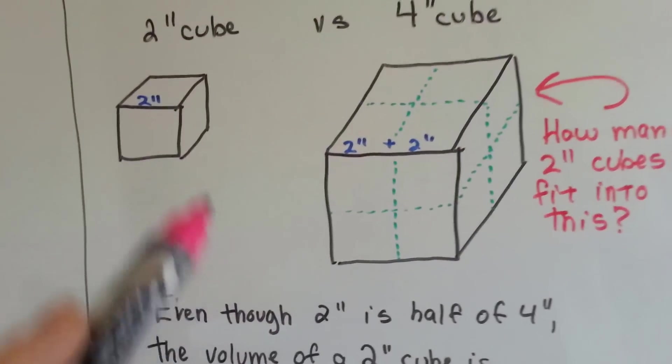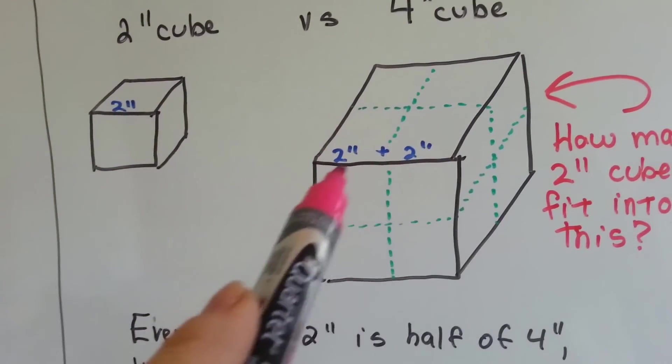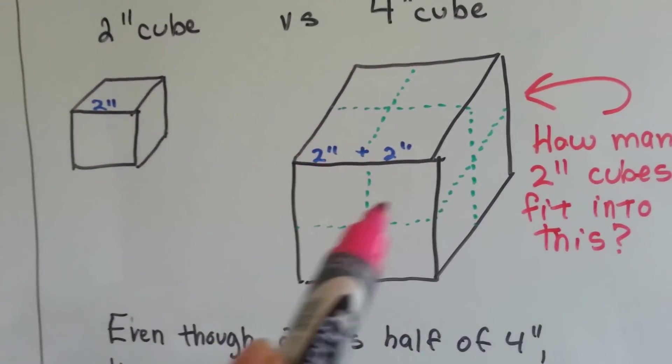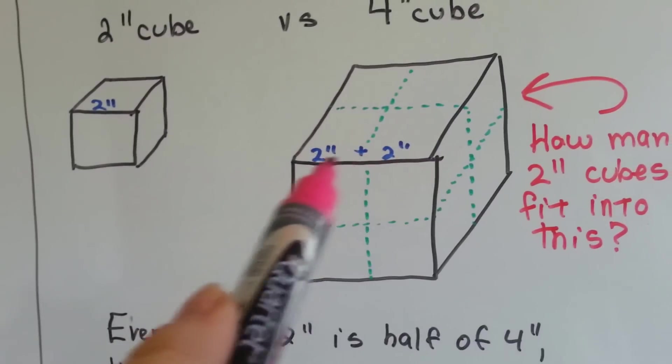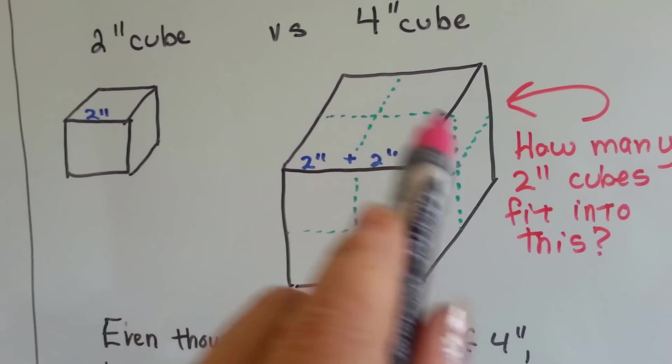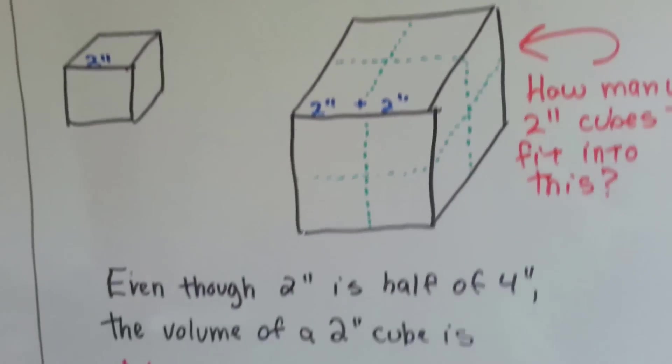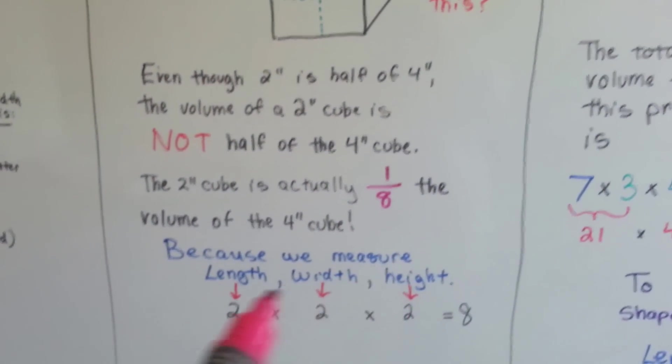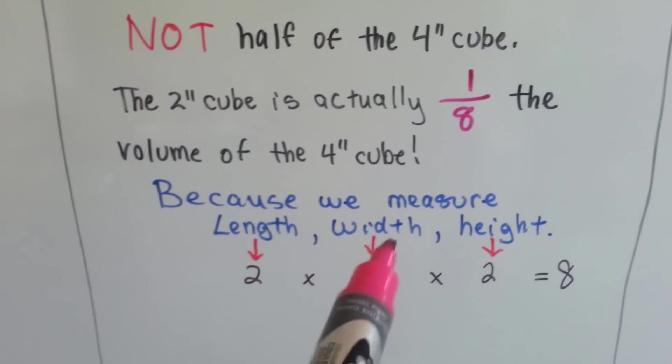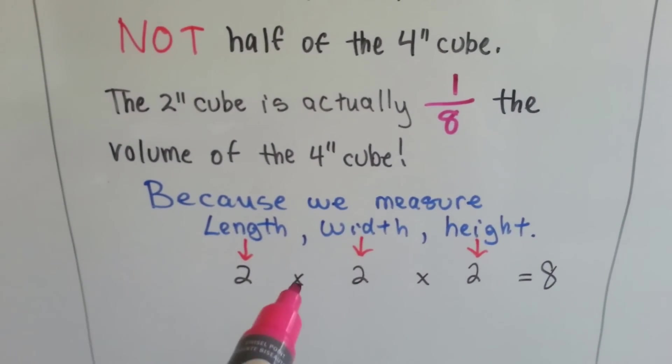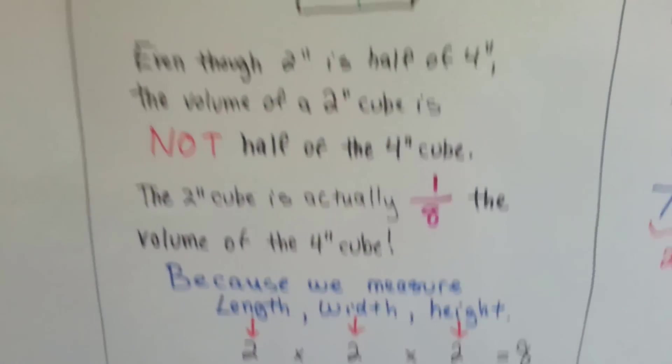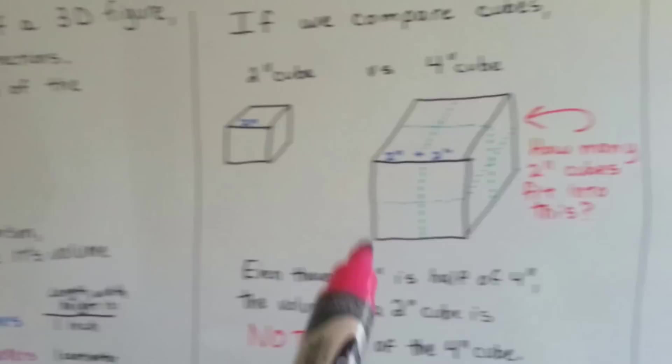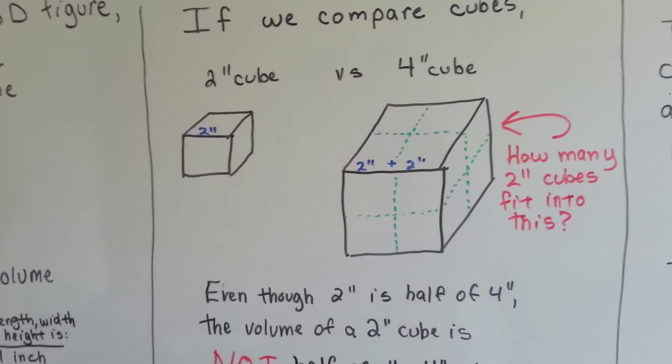The two inch cube here is actually an eighth of the volume of this four inch cube. Take a good look at this. Here's the two inch cube. Two plus two is four, so that means it would be four inches across, right, compared to two inches? But what happens when there's four? Look it. Now we have four in the front and four in the back. We have eight. Because we measure the length, the width, and the height, we multiply the length, the width, and the height. Two times two is four. Four times two is eight. So we have to multiply each one of those dimensions, length, width, and height, to find the volume. And that's why it's not double.